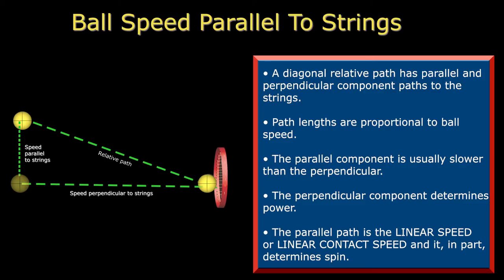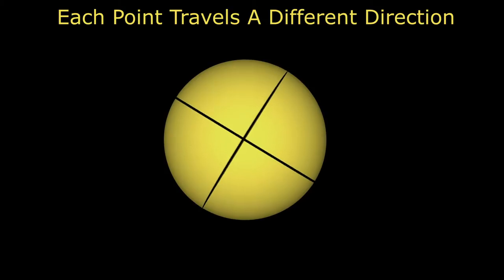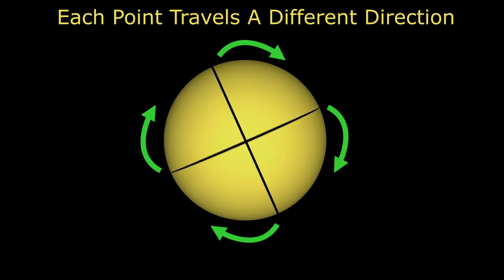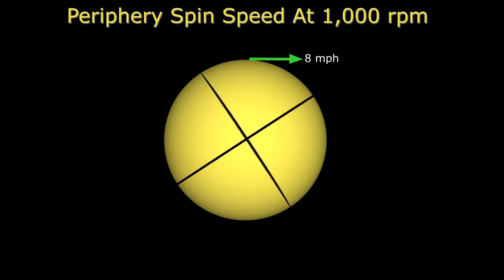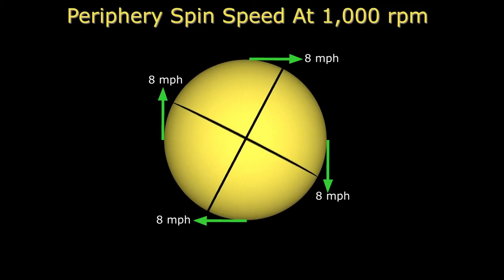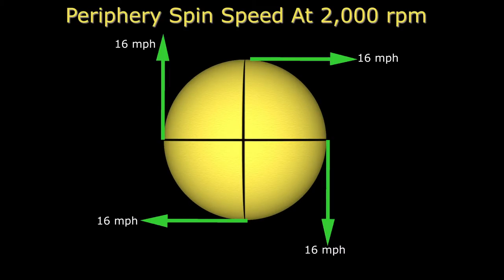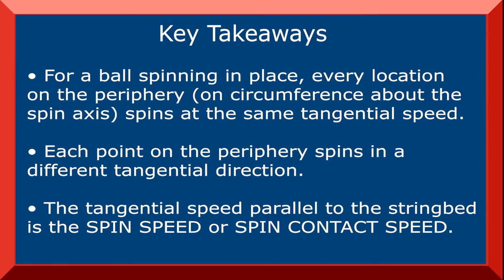Knowing the linear contact speed brings us halfway to knowing the total contact velocity. Now we have to calculate and add the spin contact speed to the linear contact speed. To do so, we first want to be able to visualize what it is like to be a spinning ball. For a clockwise spinning ball, the top of the ball is spinning to the right, the right side is spinning downward, the bottom is spinning to the left, and the left side is spinning upward. If the ball were spinning at 1000 RPM, that would mean that the speed tangential to these four locations is 8 miles per hour in the given directions. If we increase the speed to 2000 RPM, the tangential speeds would be 16 miles per hour in the indicated directions. So, for a ball spinning in place, every location on the periphery spins at the same tangential speed, and each point on the periphery spins in a different tangential direction. Going forward, we will call this tangential speed at the contact point the spin speed. In order to get the total speed at each of these four locations on the ball, we add the tangential spin speed and the linear speed together.